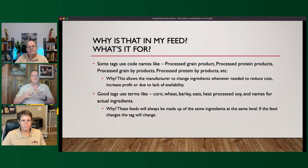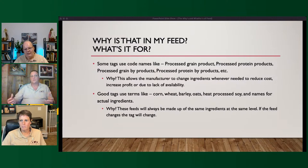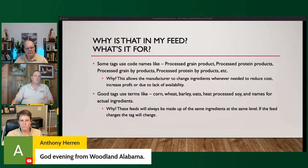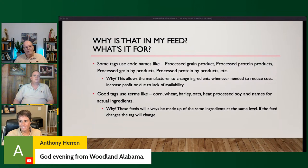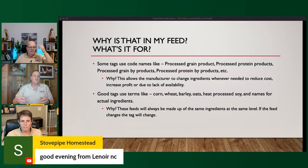The big manufacturers — and I don't need to name names — when you're reading tags, it's really frustrating: you see code names like 'processed grain products,' 'processed protein products,' 'processed grain byproducts,' 'processed protein byproducts.' The reason they do that is: today if corn is cheaper than wheat, they're going to put in more corn; tomorrow if barley is cheaper than corn, they're going to use more barley. It allows them to change the ingredients whenever they want.